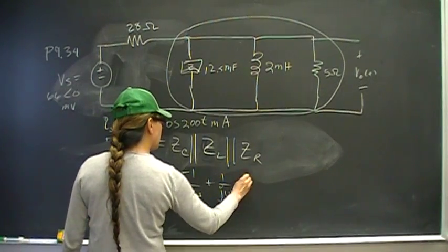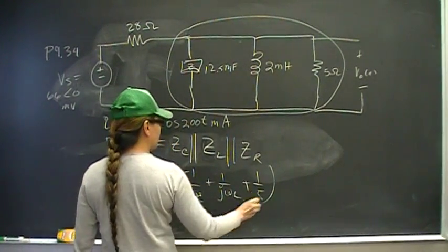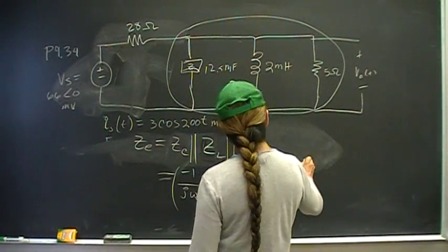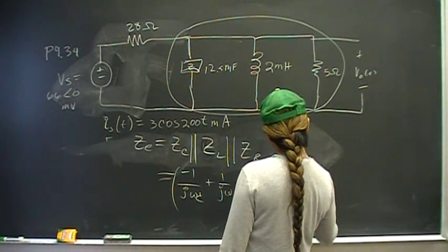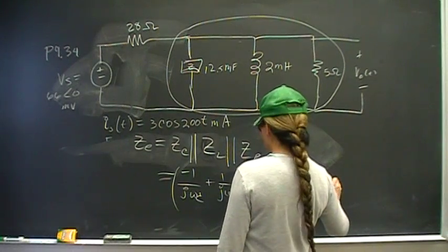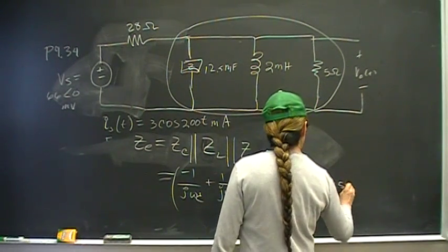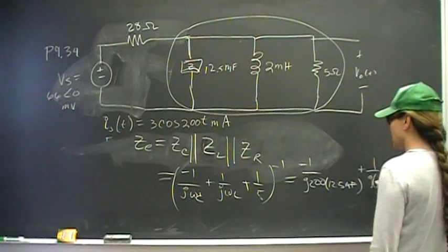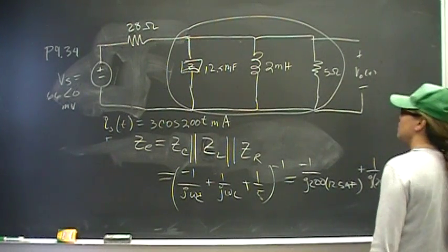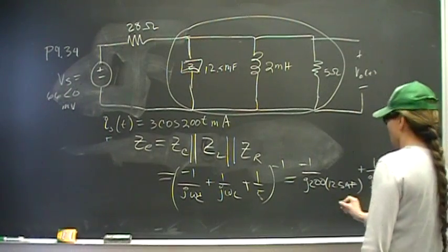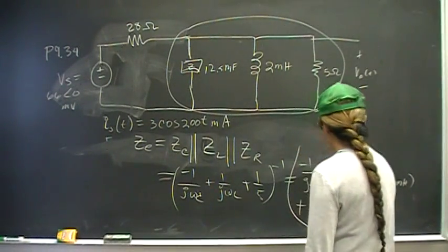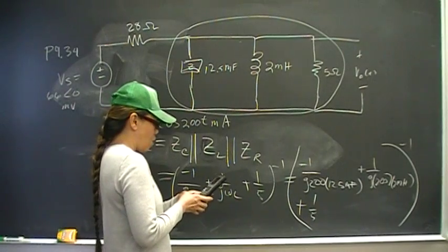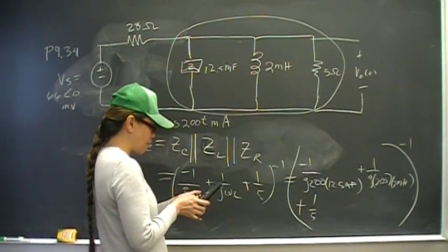That is equal to negative 1 over j omega C plus 1 over j omega L plus 1 over 5, all that inverted. What you'll enter in your calculator is negative 1 - the omega is 200 - j times 200 times C, which is 12.5 millifarad. Make sure not to mess up your units. Plus 1 over j times 200 times 2 millihenries, plus 1 fifth, that whole thing raised to the negative 1 power.